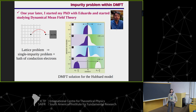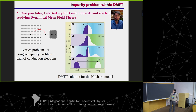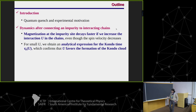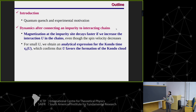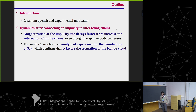After working with the Kondo effect for many years in the static situation, I proposed to a former student of mine, Elena, that we study the formation of the Kondo effect as a function of time, and that's what I'm talking about today. Here's the outline: I will define a quantum quench and show one experimental motivation for our work. Then I will discuss the dynamics after connecting an impurity to interacting chains — showing that the magnetization at the impurity site decays faster if we increase the interaction in the chains. More recently, we got an analytical expression for the Kondo time, which says that U favors the formation of the Kondo cloud.